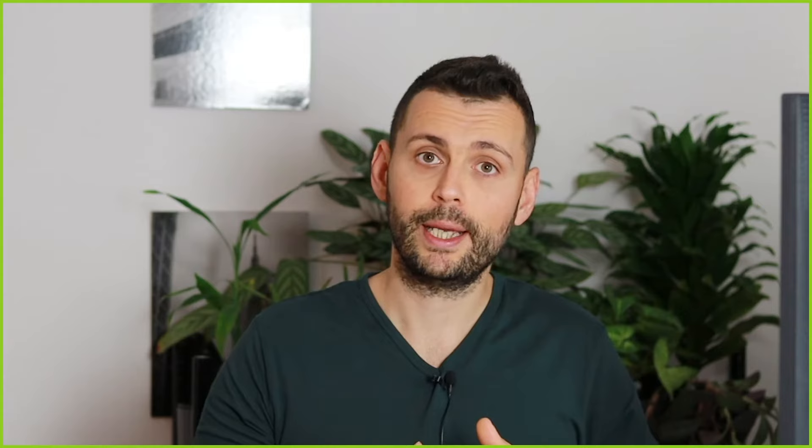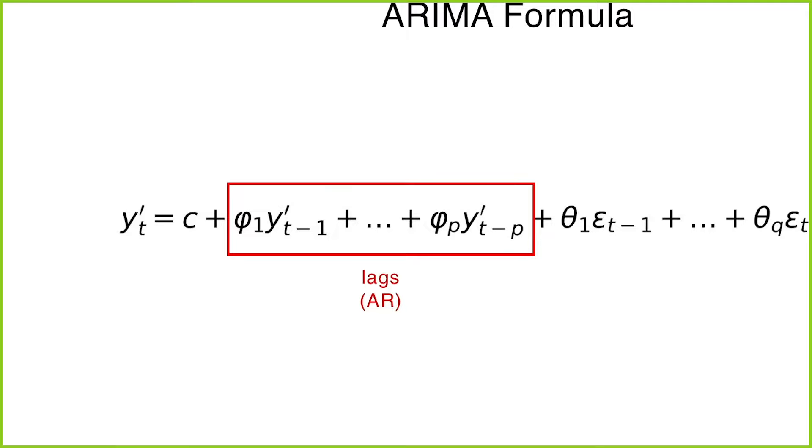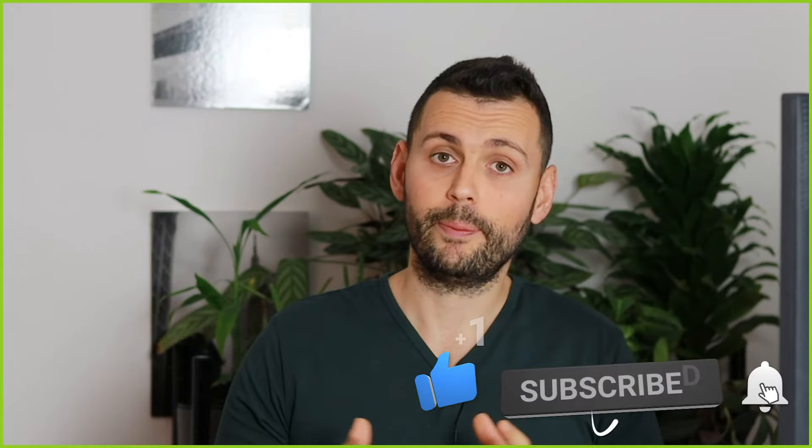Coming back to the ARIMA model, we know we need a stationary time series. The answer lies in the autoregressive term — because it's autoregressive, the model is a linear regression that uses its own lags as predictors. Linear regression works best when the predictors aren't dependent on each other, because if they are dependent, we run into the problem of multicollinearity. In that scenario, if these predictors are correlated, our linear regression will be unstable and might not reach a result.